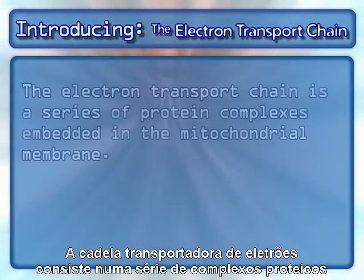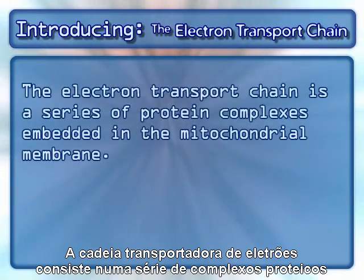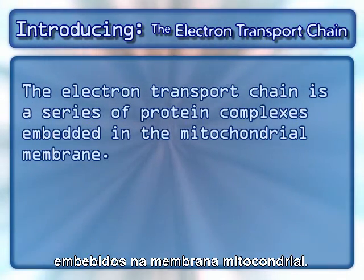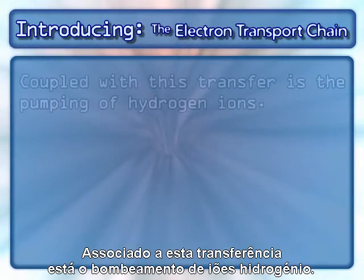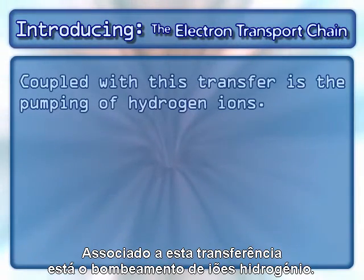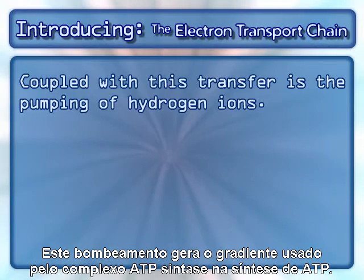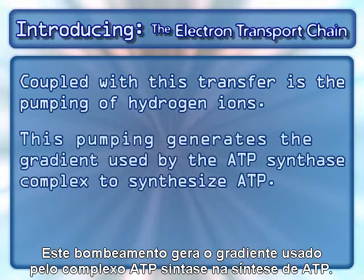The electron transport chain is a series of protein complexes embedded in the mitochondrial membrane. Electrons captured from donor molecules are transferred through these complexes. Coupled with this transfer is the pumping of hydrogen ions, which generates the gradient used by the ATP synthase complex to synthesize ATP.